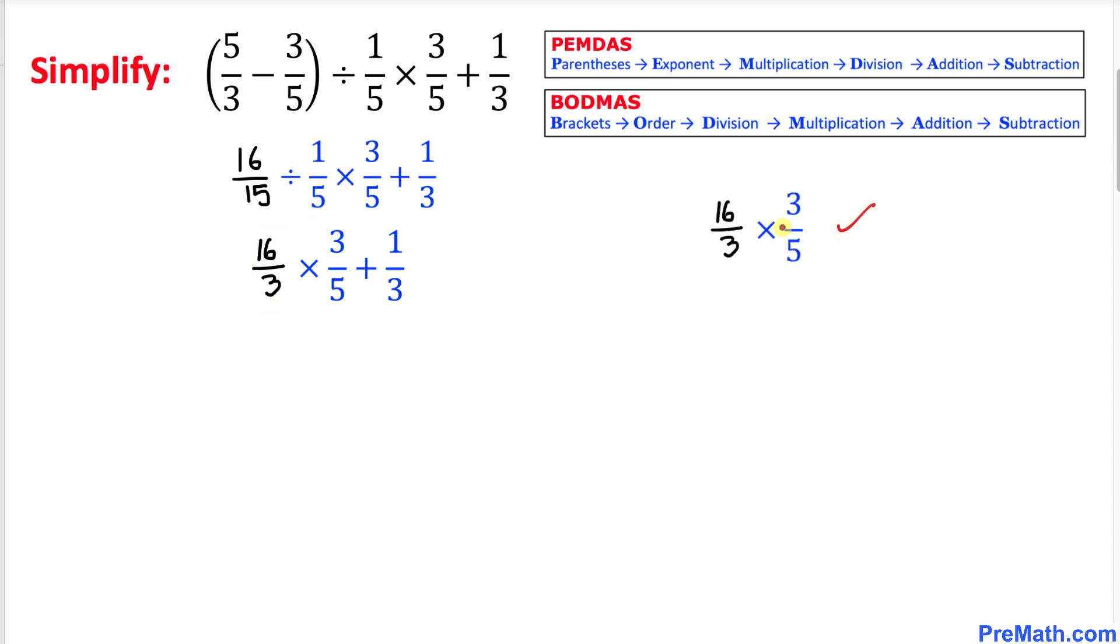Here I have copied it down. Let's multiply these two fractions. We can see this 3 and 3, they cancel each other out. So we got 16 divided by 5.